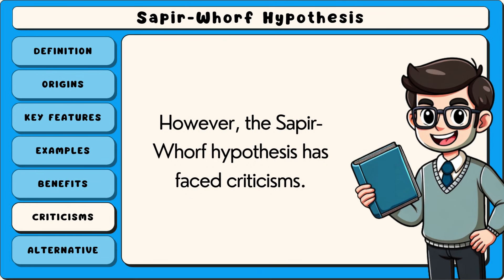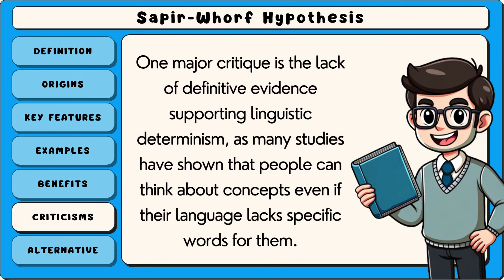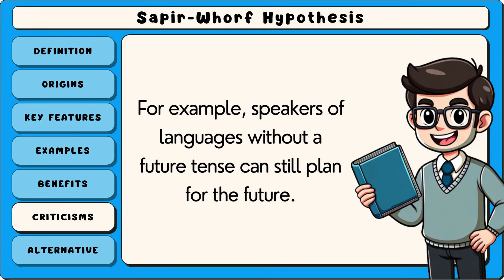However, the Sapir-Whorf hypothesis has faced criticisms. One major critique is the lack of definitive evidence supporting linguistic determinism, as many studies have shown that people can think about concepts even if their language lacks specific words for them. For example, speakers of languages without a future tense can still plan for the future.